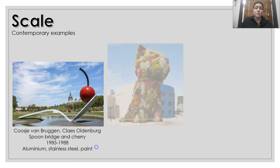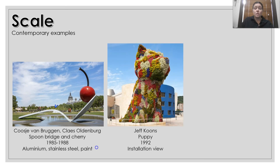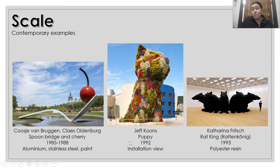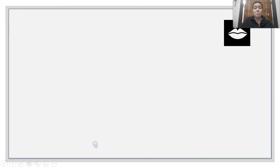Some contemporary examples of scale: you have the joint collaboration piece by Van Gruggen and Oldenburg, which is the sculpture. You've got the Jeff Koons work of the puppy showing great scale — normally puppies are very small, but here it's very big and made of flowers. And you've got the Rat King as well, which is also showing a bit of proportion.